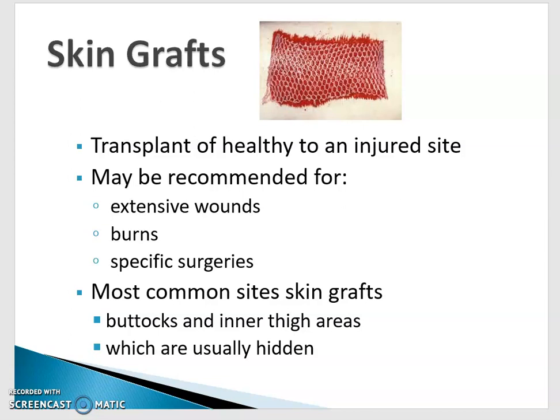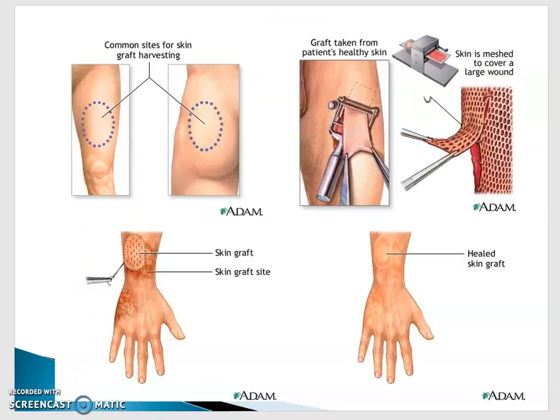A skin graft might be the ultimate result of that process — a transplant of healthy skin onto an injured site. It may be recommended for extensive wounds, burns, or certain types of surgeries. The most common harvest sites are the buttocks and inner thighs, which are usually hidden. They use a dermatome to harvest the skin and place it over the damaged area. Here you can see the harvest site, the dermatome shaving skin off, and the graft being applied to what appears to be a burn on the posterior wrist. YouTube has great detailed videos of skin grafts if you want to see more.